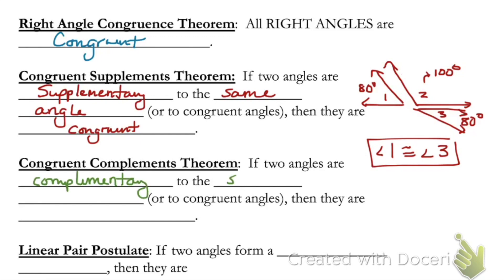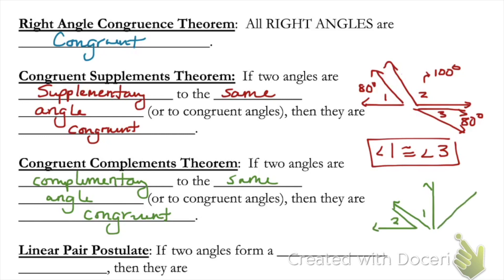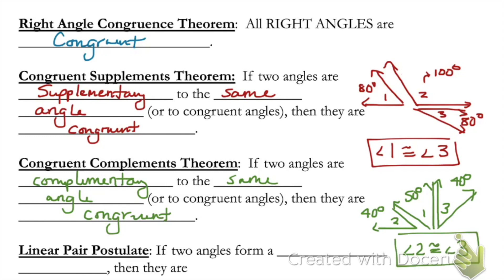Similarly, the congruent complements theorem says that if two angles are complementary to the same angle, or to congruent angles, then those angles must be congruent. Unlike supplementary, complementary means the two angles add up to 90 degrees. So if angle one is 50 degrees and angle two is 40 degrees, those add up to 90, meaning they're complementary. But if angle three is also 40 degrees, then angle one and angle three also add up to 90 degrees, making them complementary. Since angles two and three are both complementary to angle one, they must be congruent.